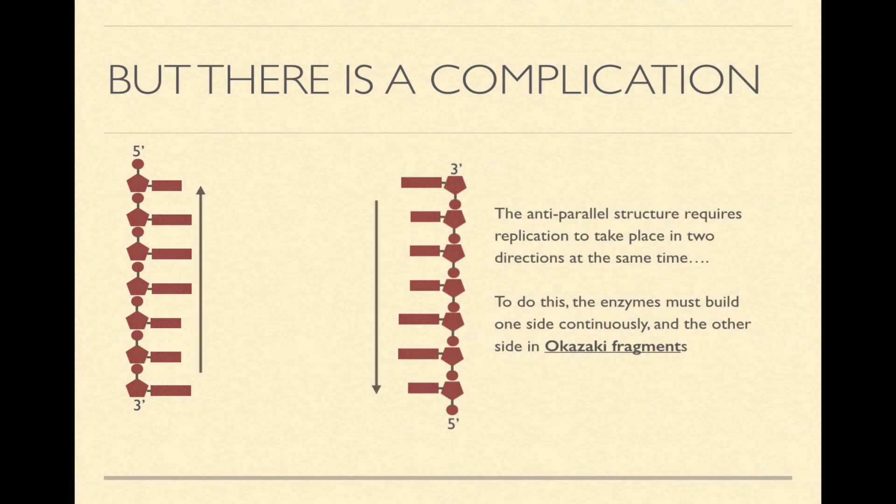So that means that each strand of DNA is being replicated in opposite directions, because of its anti-parallel structure. So the anti-parallel structure requires DNA replication to take place in two directions at the same time. And in order for the cell to do this, the enzymes must build one side continuously and the other side in pieces called Okazaki fragments.